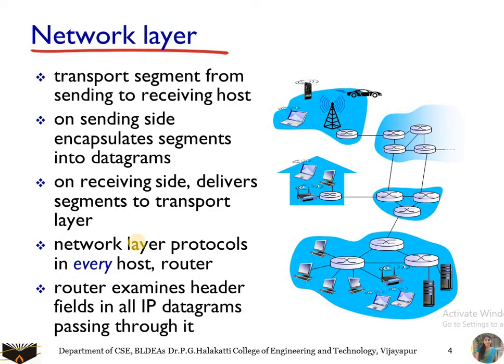The network layer provides host-to-host delivery of the packet. It is also called source-to-destination delivery or machine-to-machine delivery of packets or segments. This is done based on addresses. Here we use logical addresses, which are also called IP addresses. An IP address consists of two parts: the first is a network ID and the second is the host ID.